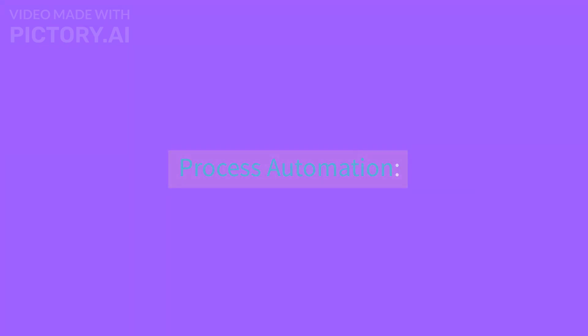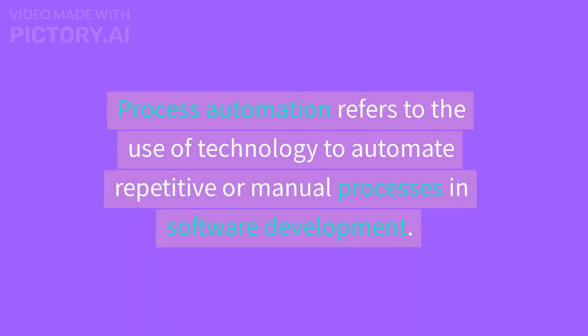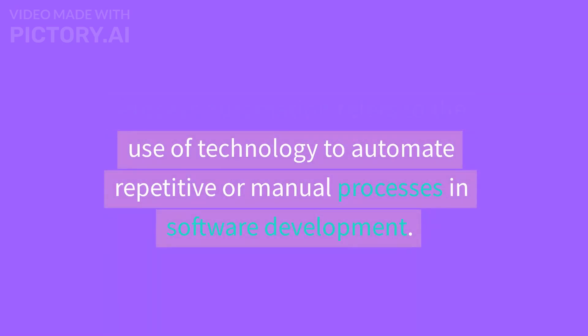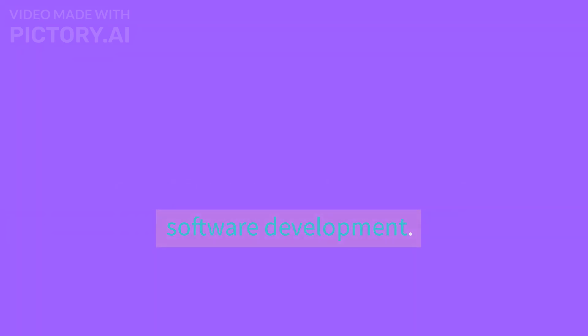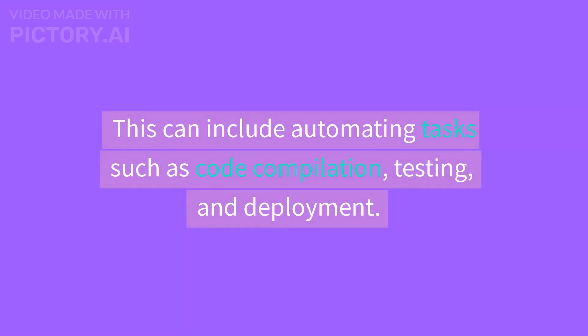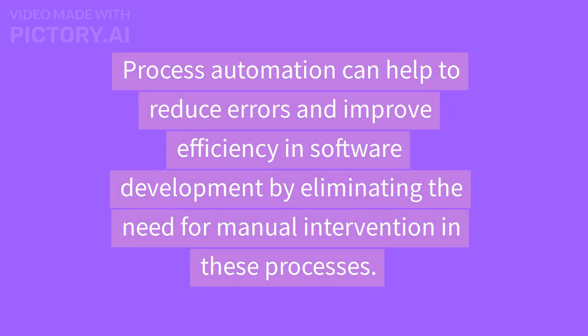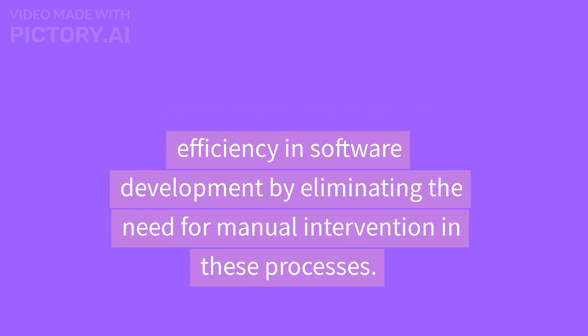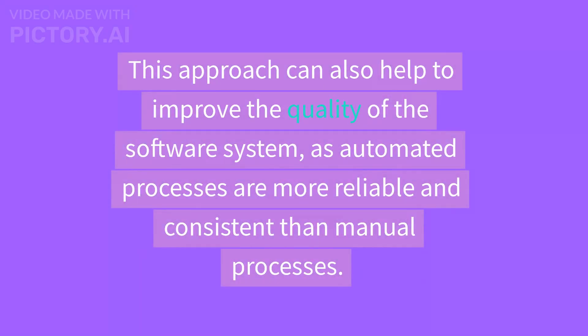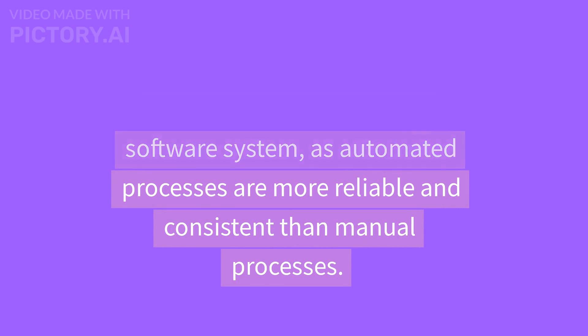Process Automation refers to the use of technology to automate repetitive or manual processes in software development. This can include automating tasks such as code compilation, testing, and deployment. Process automation can help to reduce errors and improve efficiency by eliminating the need for manual intervention. This approach can also help to improve the quality of the software system, as automated processes are more reliable and consistent than manual processes.